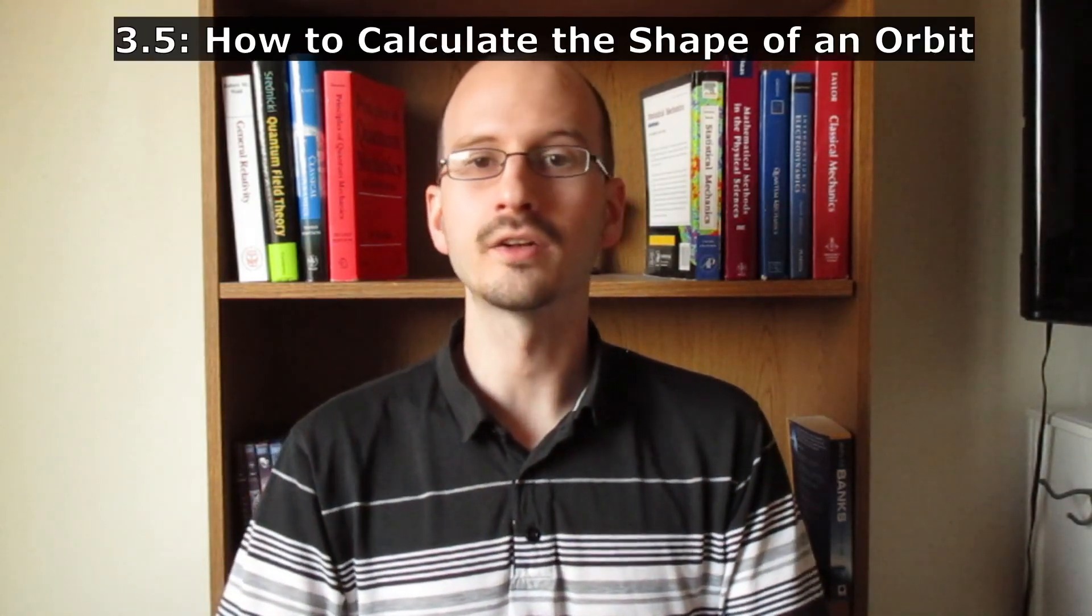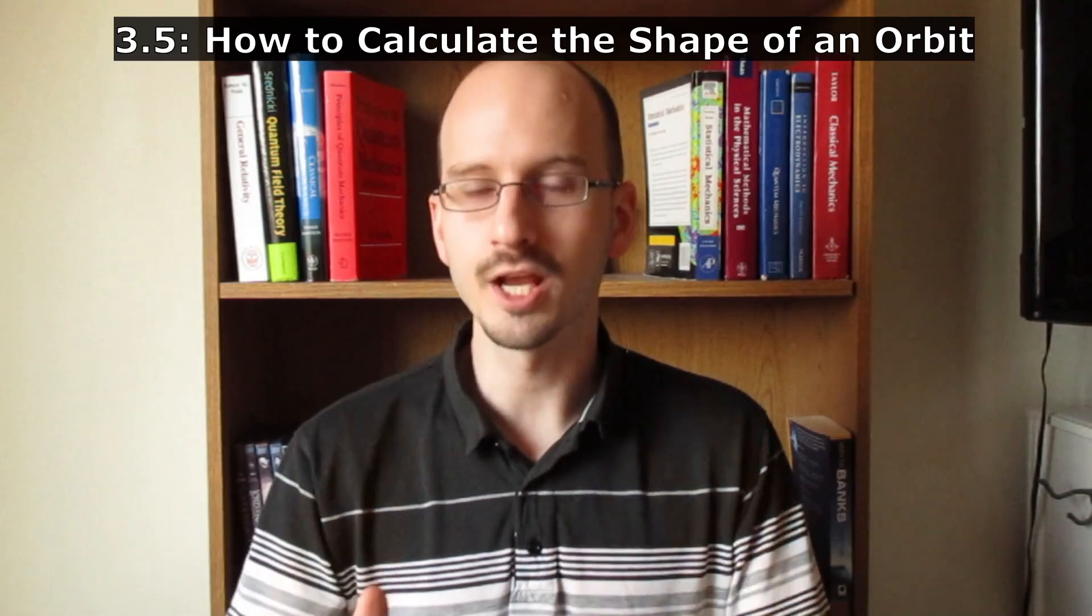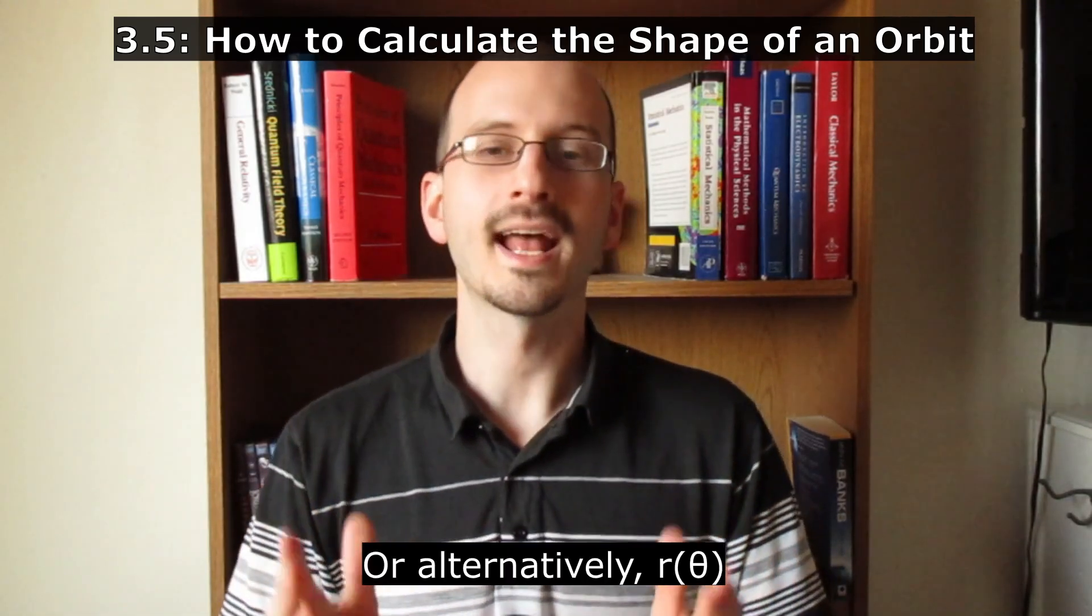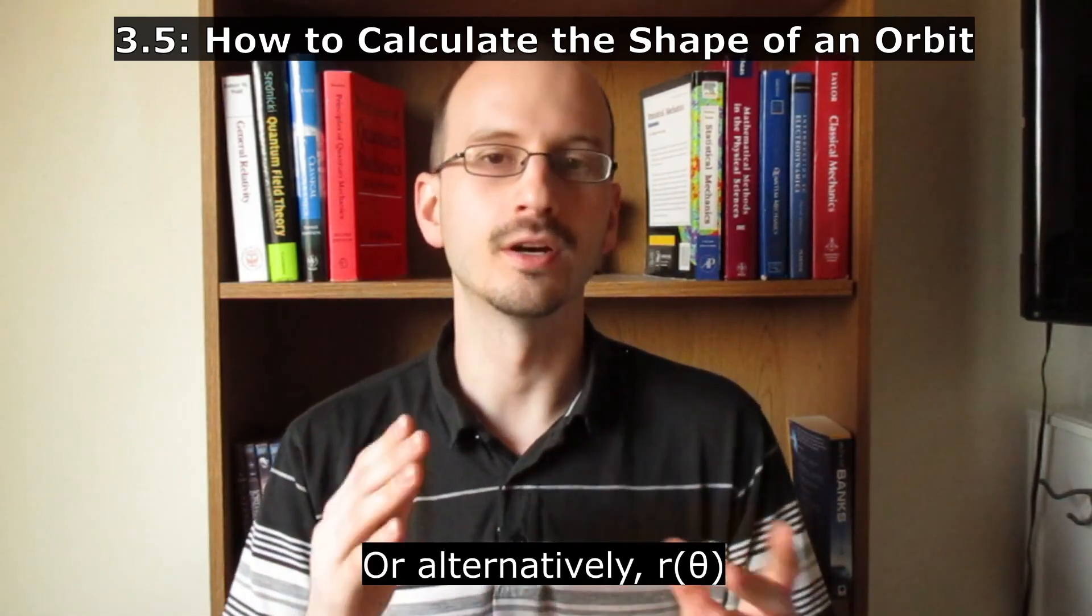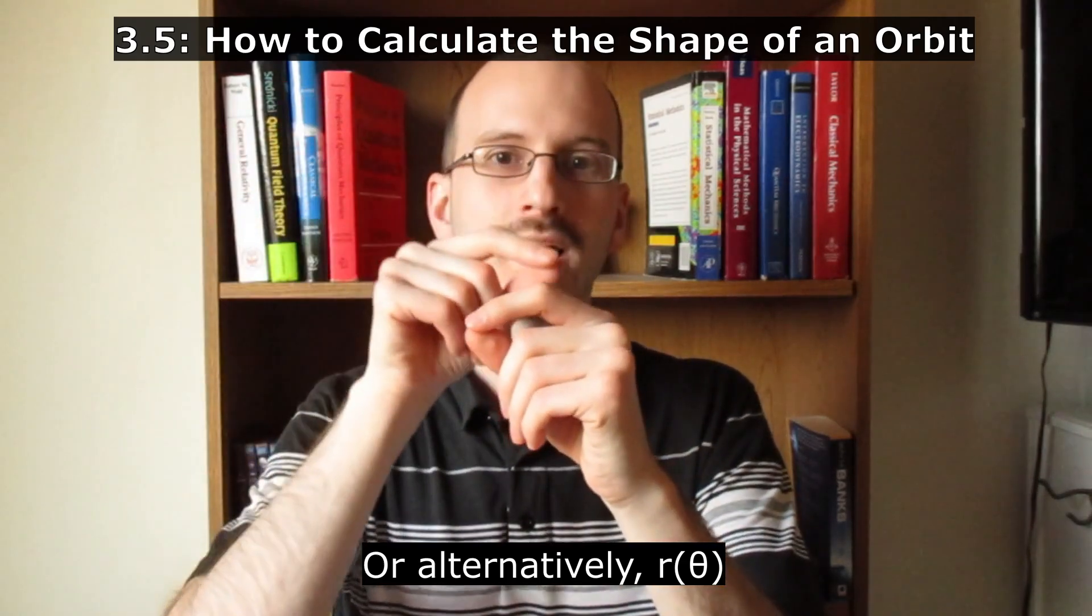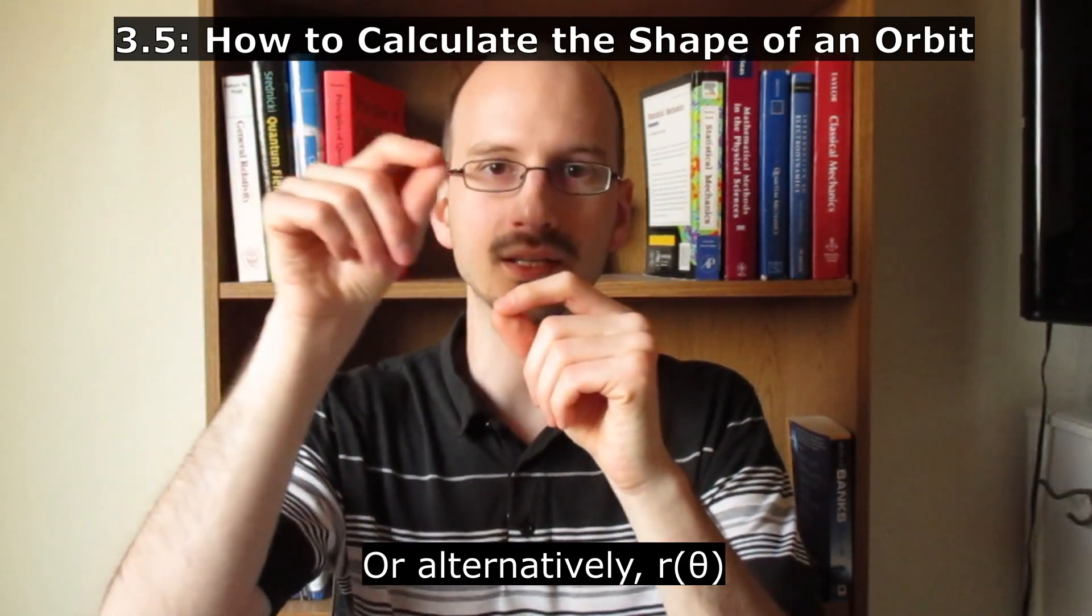The chapter spends time deriving it mathematically, but the important thing is that the Virial Theorem is this. The average kinetic energy of a system of particles is equal to a half of the average potential energy. It's an equation that can be used as a tool and will come up later in this video.